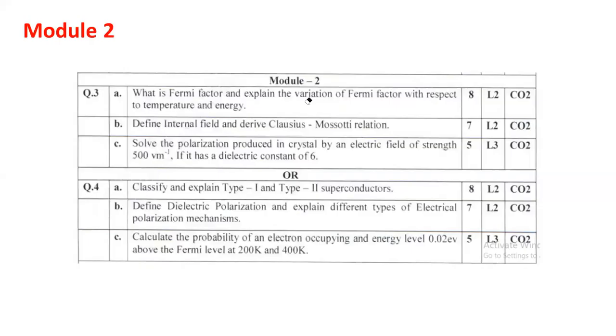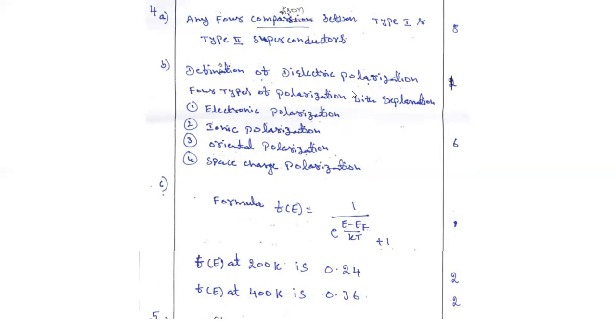Question number 3C. There is a problem numerical related to solve the polarization produced in crystal by electric field of strength 500 volt per meter if it has dielectric constant of 6. Write down the parameter. It is always better to go for this particular equation, standard equation. You can compute independently. First, FOP at 200K. FOP at 400K. You can calculate separately. First answer was 0.24. Second answer is 0.36. Very simple problem.